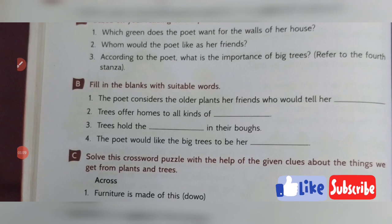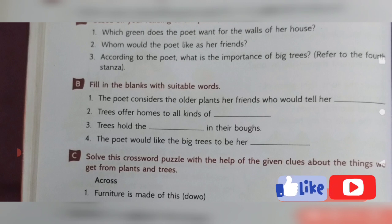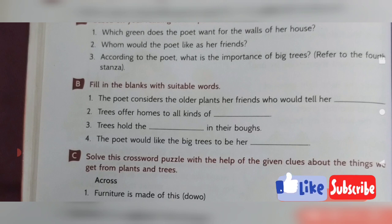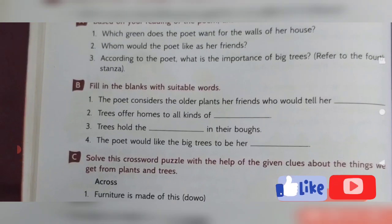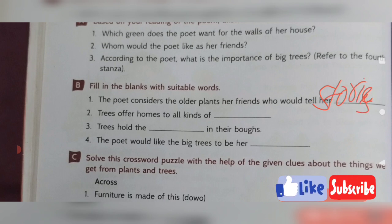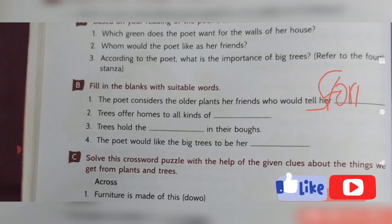Now come to question number B — Fill in the blanks with suitable words. The blanks are given and you have to fill in the appropriate words. The first one: The poet considers the older plants her friends who would tell her — stories. So in the first blank you will write 'stories': S-T-O-R-I-E-S.